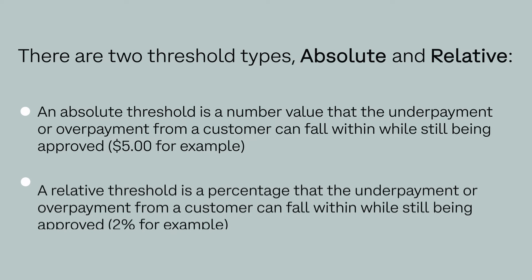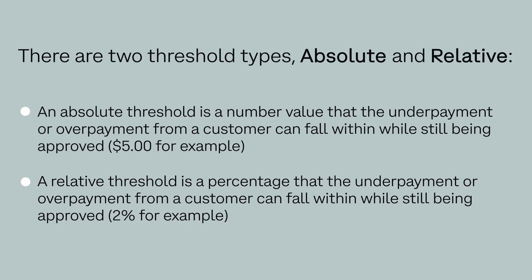A relative threshold is a percentage that the underpayment or overpayment from a customer can fall within while still being approved — 2%, for example. The stricter threshold will always be the one that's approved to ensure that the payment is as close to the original price as possible.